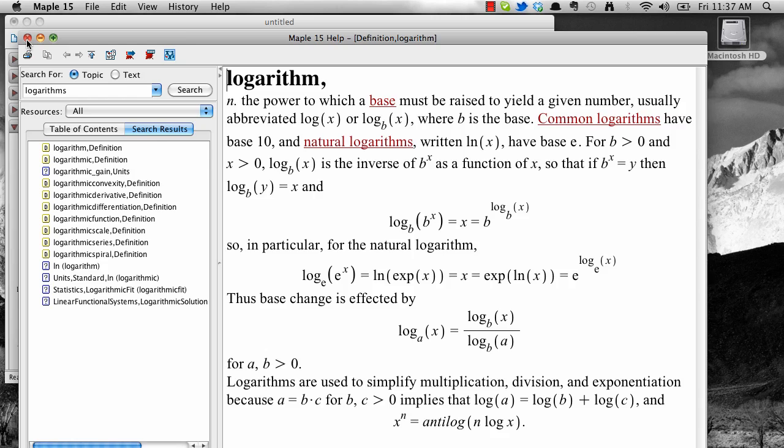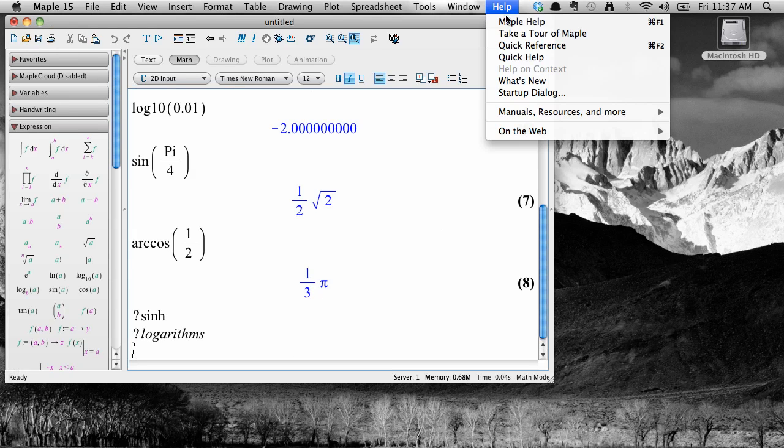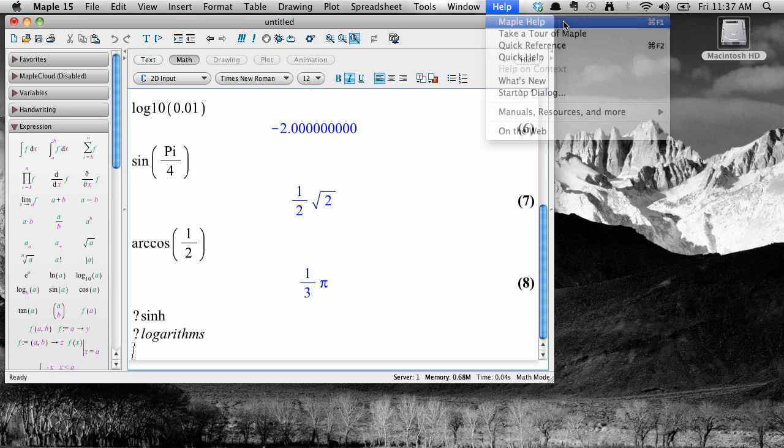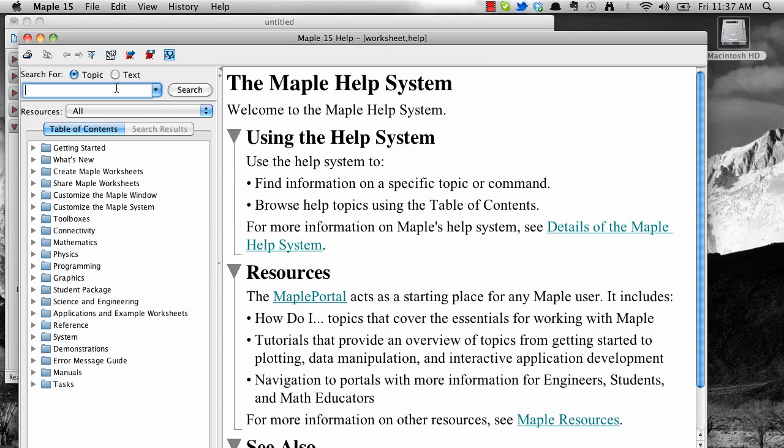Another way to get help or browse features is to go to the Help menu, select Maple Help, and then enter in the search term you want. You can find help on any of Maple's features this way.